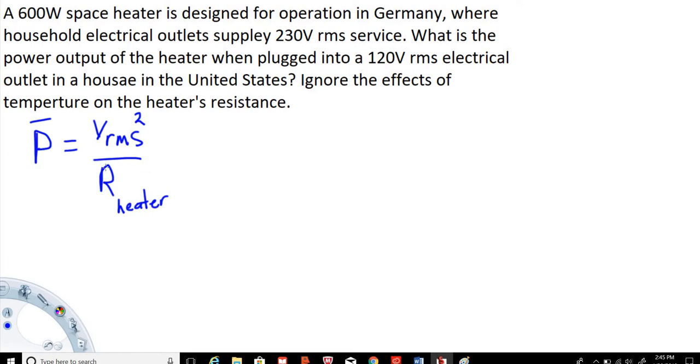So let's see what we have in this problem. We have a 600 watt space heater. And we know power is in watts, so we have a power of 600 watts. So let's write that in, 600 watts. And we also have, in Germany, the voltage RMS is 230. So that is 230 volts RMS squared.